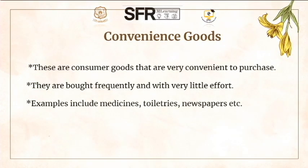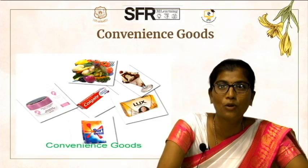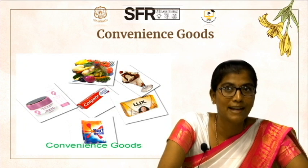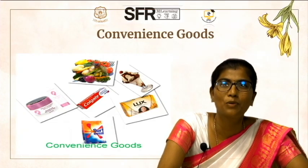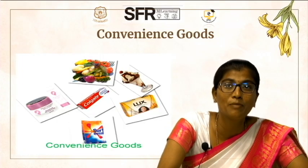Convenience goods: such convenience products have ongoing and continuous demand. These are consumer goods that are very convenient to purchase. They do not need much effort, much money, or much time before making a purchase decision. They are bought frequently and with lesser effort. Examples are medicines, toiletries, newspapers, eatables, etc. We can see the majority of these products are fast moving consumer goods — toothpaste, soap, washing powder, eatables, snacks, vegetables, medicines. We do not need much effort and time to spend before making the purchase decision.